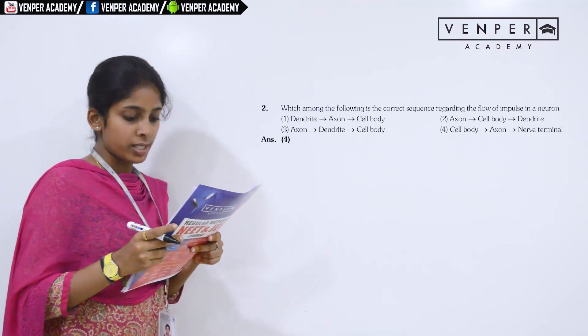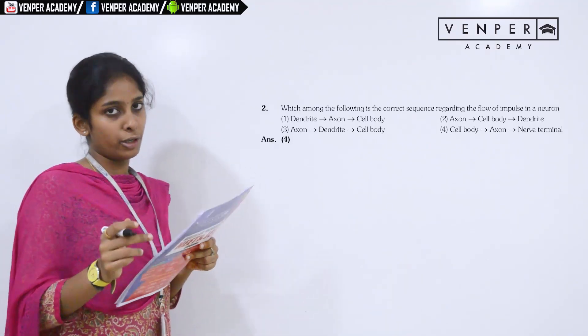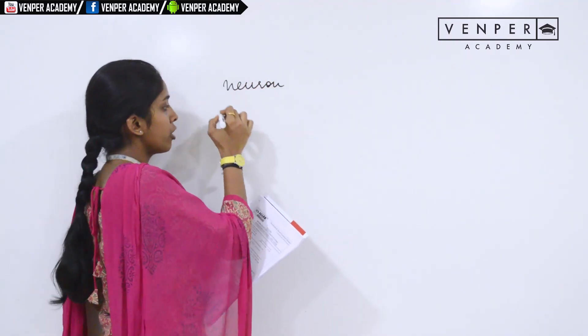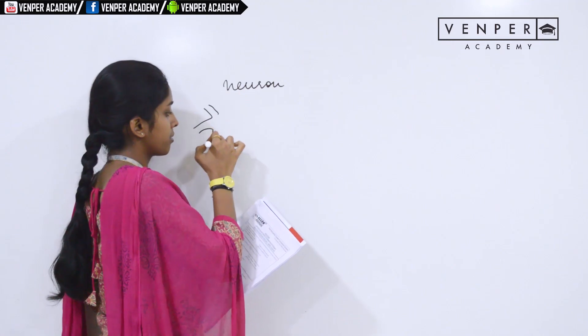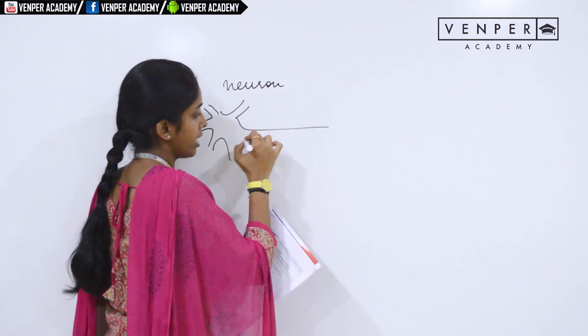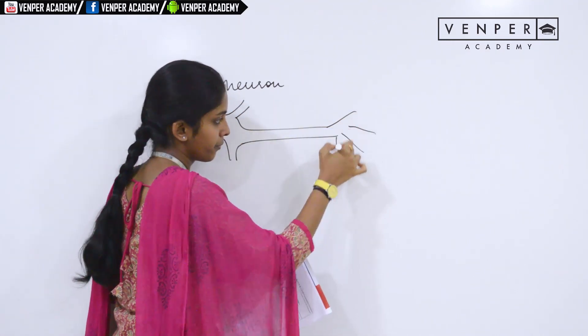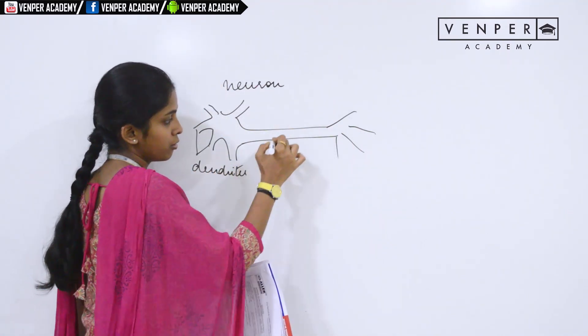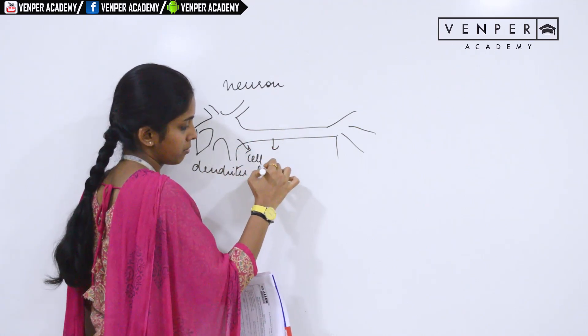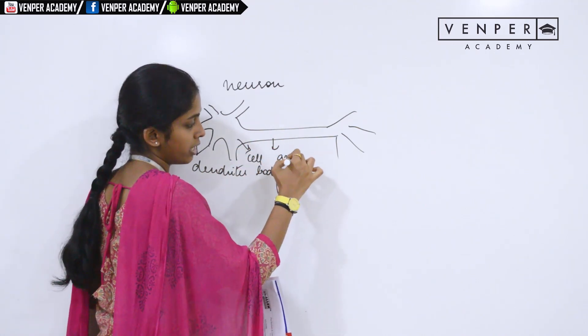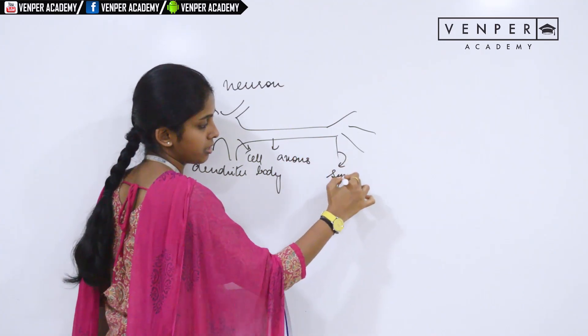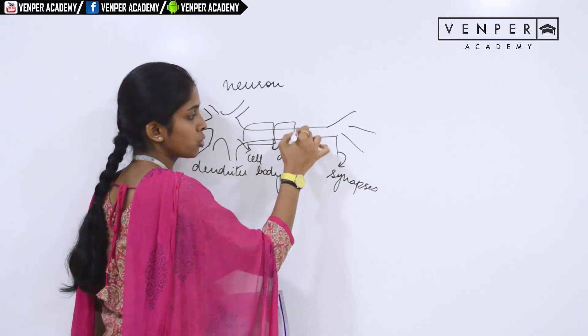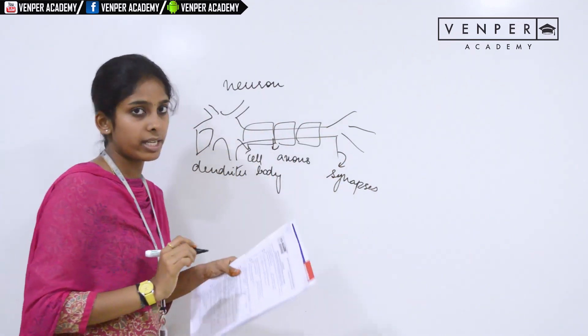Which among the following is the correct sequence regarding the flow of an impulse in a neuron? A neuron is the structural unit of a nerve. Your neuron will look like this. All these will be your dendrites. This would be your cell body. These are your axons and this would be your synapses. Here you have myelin sheaths, Schwann cells, node of Ranvier and so on.